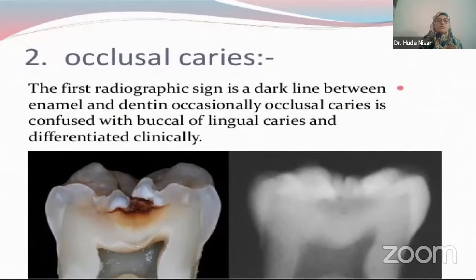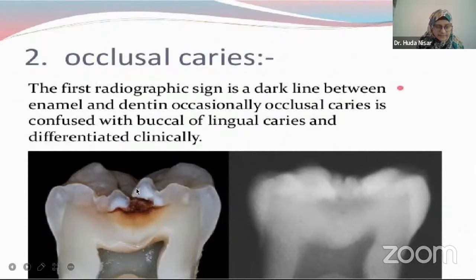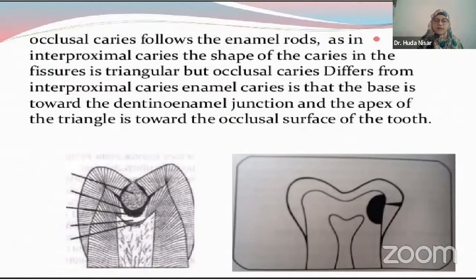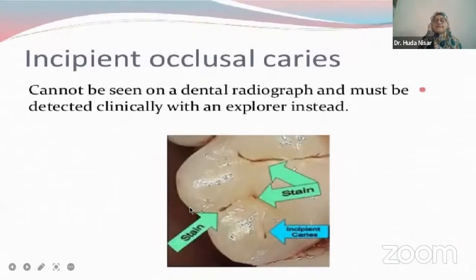Now coming to occlusal caries. The first radiographic sign is a dark line between enamel and dentine. Occasionally, occlusal caries is confused with buccal and lingual caries, but it could be differentiated clinically. You can appreciate that the intact enamel has not suffered that much, but the dentine has severely suffered. The lesion has started as a pit over the enamel, but as you get deep into it, you will see there's a very extensive lesion reaching to the dentine and might also reach to the pulp. Incipient occlusal caries cannot be appreciated on a radiograph — you need an explorer, and they do not have any radiographic significance.